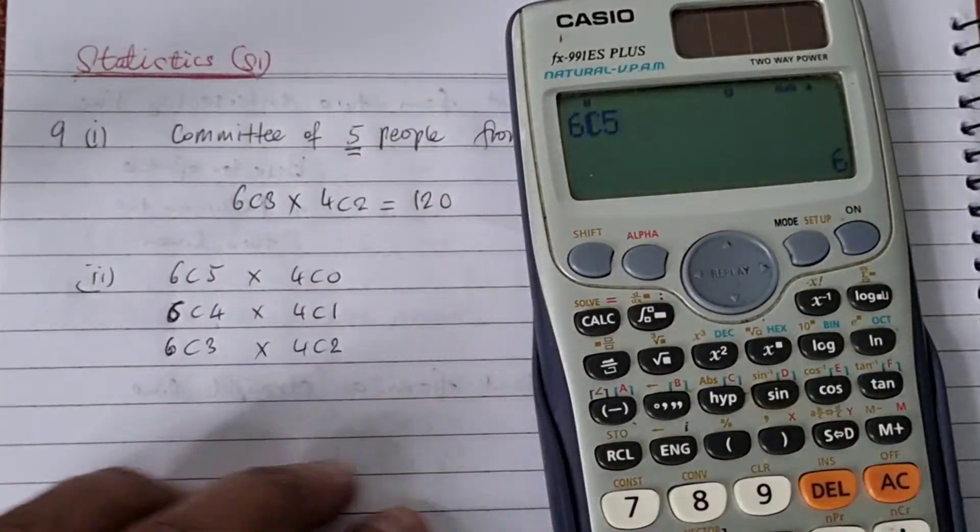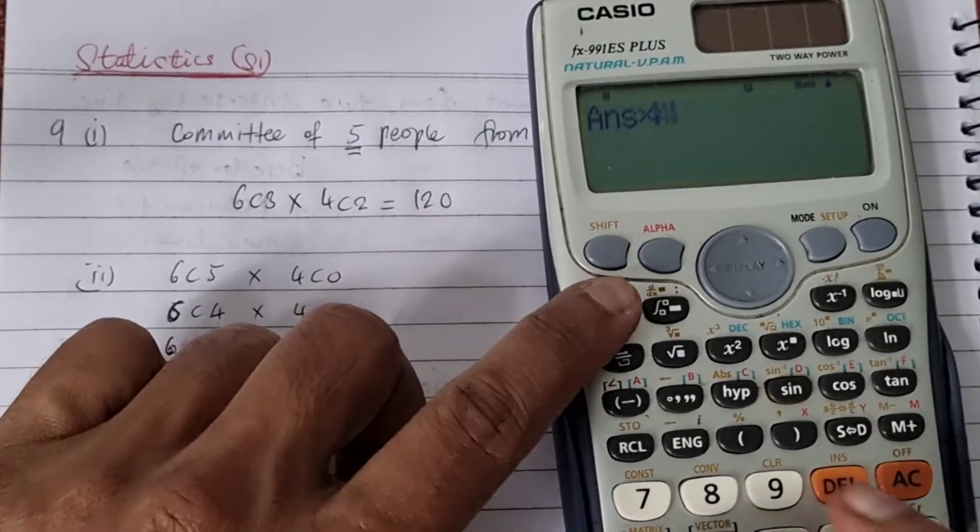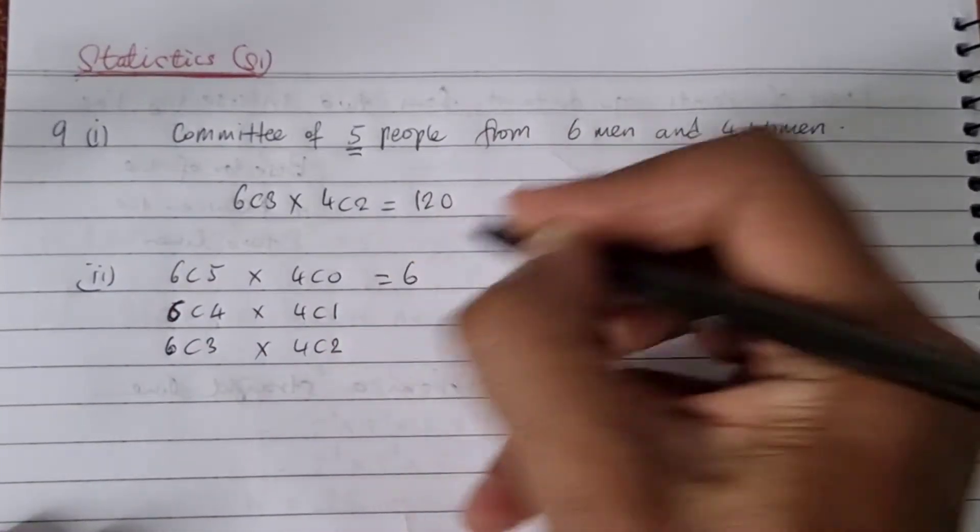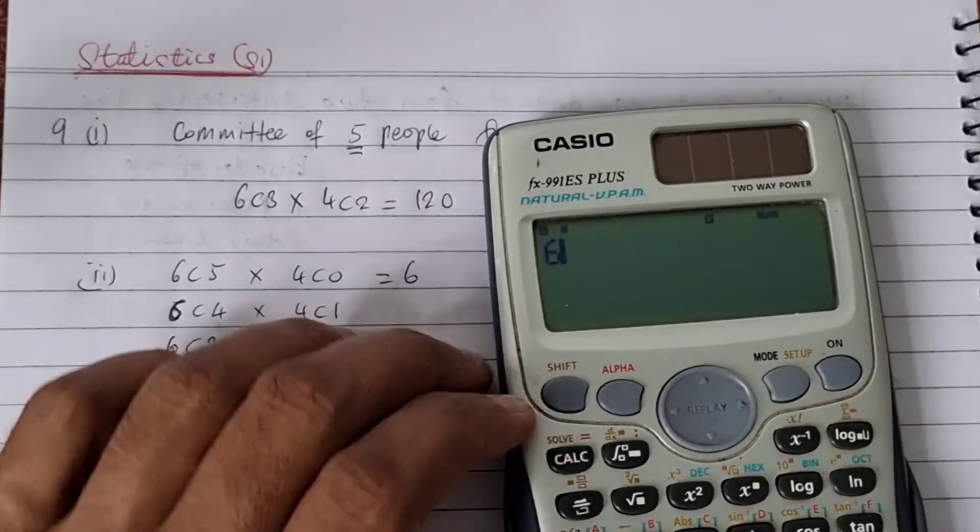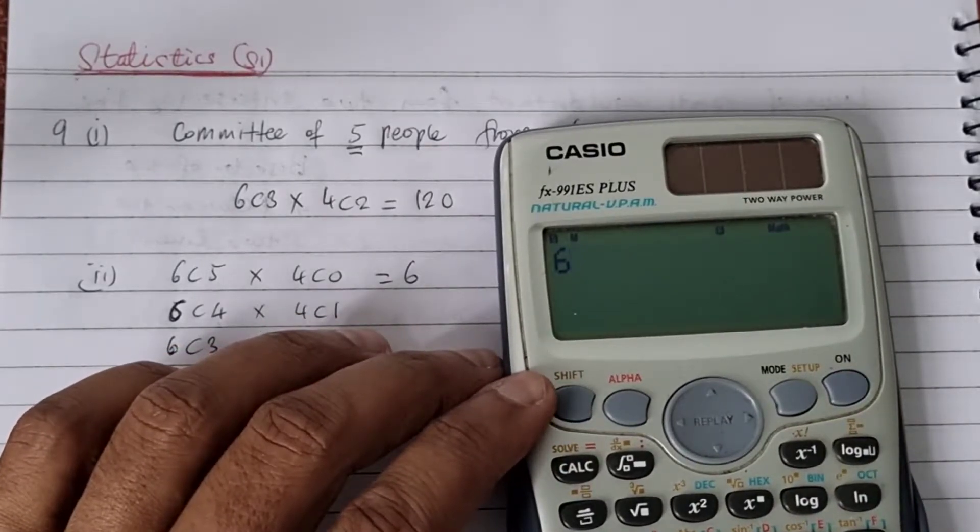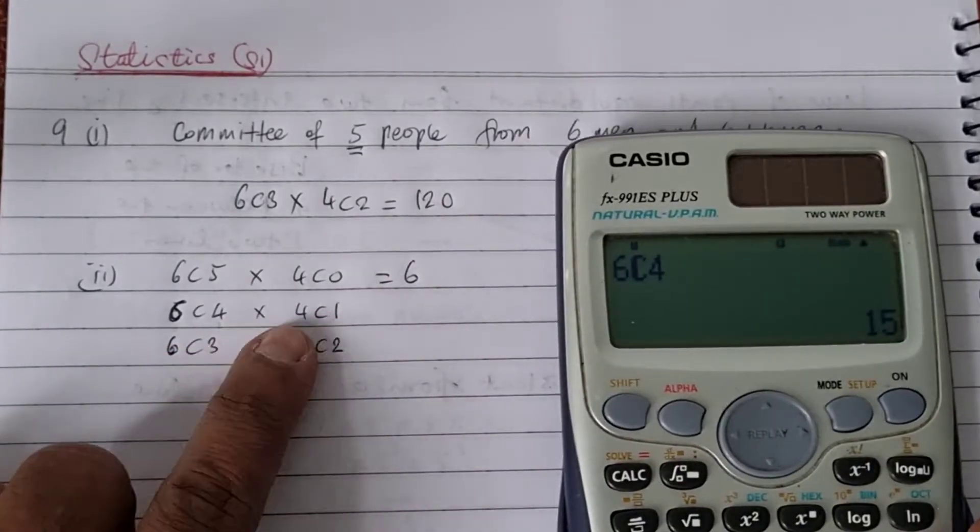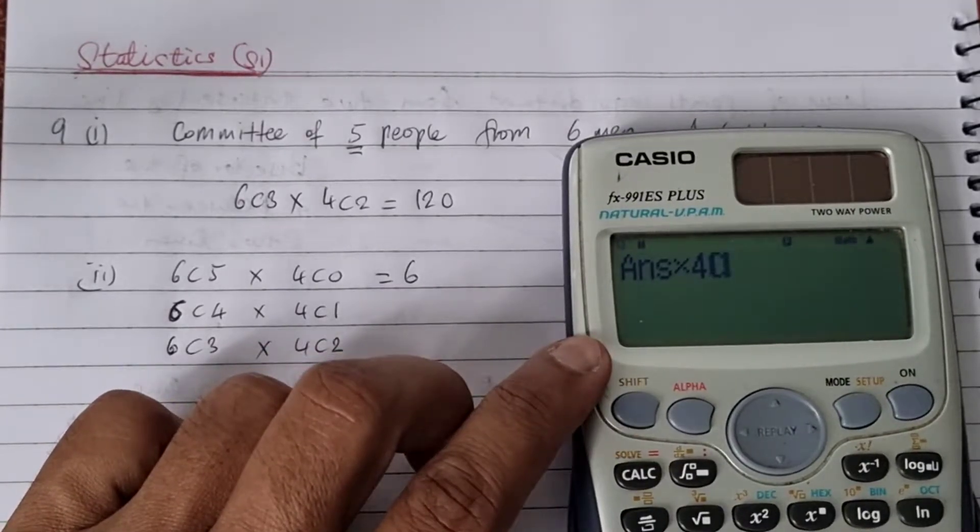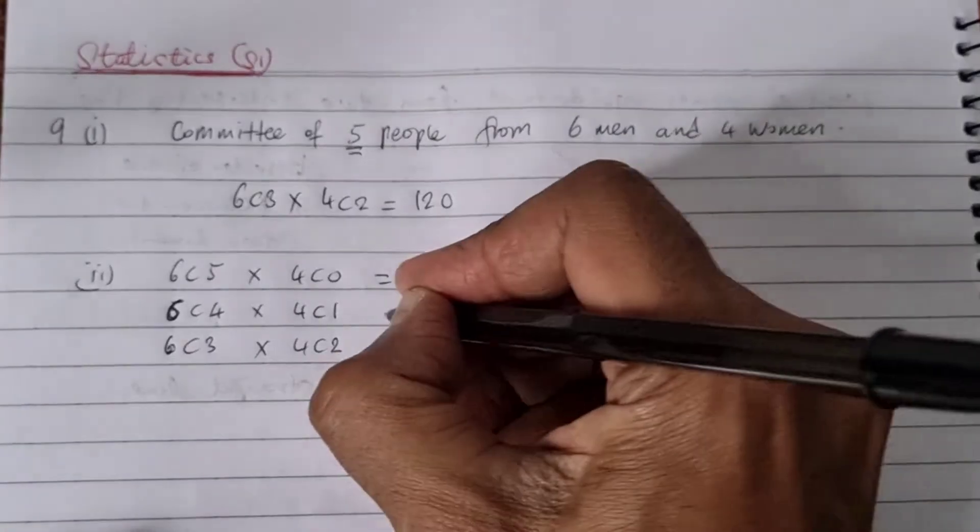So six choose five is six, times four choose zero is one, times six. And six choose four times four choose one, so that's going to be equal to 60.